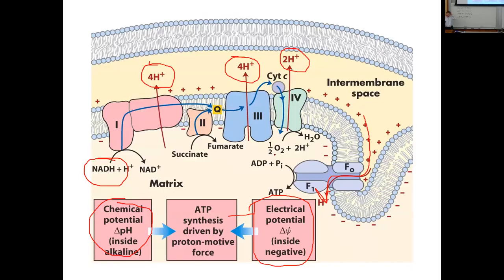The chemical energy — the concentration difference — represents about 20% of the available energy, while the electrochemical charge difference represents about 80% of the energy available to drive the synthesis process. So the general thrust of ATP synthesis is: the electron transport chain carries out oxidations, that energy is captured to pump protons, and proton re-entry drives a molecular motor that facilitates ATP synthesis.